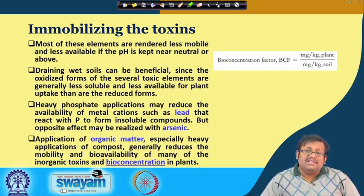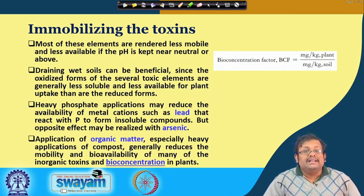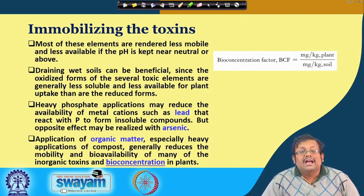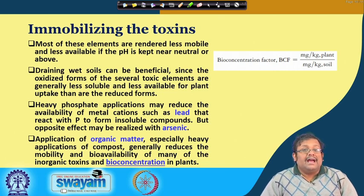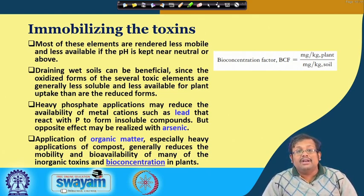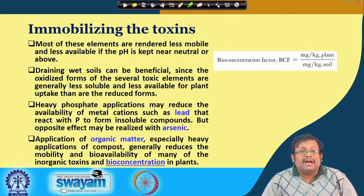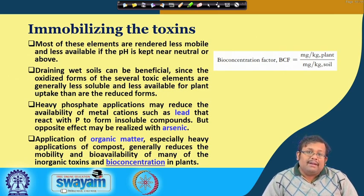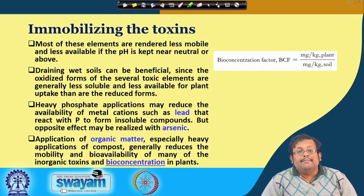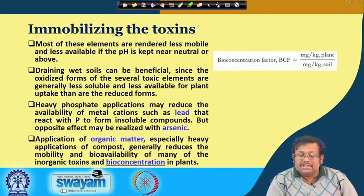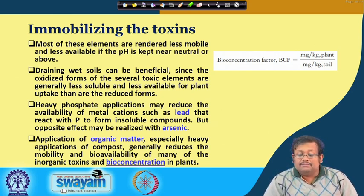The second important aspect is the management approach — immobilizing the toxin. Most of these elements are rendered less mobile and less available if the pH is kept near neutral and above. Draining wet soils can be beneficial since oxidized forms of several toxic metals are generally less soluble and less available for plant uptake than reduced forms. Heavy phosphate application may reduce the availability of metal cations such as lead; however, it does the opposite with arsenic, increasing arsenic availability. Application of organic matter, especially heavy compost application, generally reduces the mobility and bioavailability of many inorganic toxins. The bioconcentration factor is calculated as milligrams of heavy metal per kilogram of plant tissue divided by milligrams per kilogram of soil.